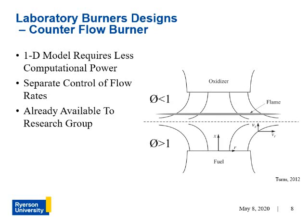Diffusion occurs across the stagnation plane, resulting in a gradient of fuel and air mixtures. A laminar flame will sit where the fuel and oxygen concentrations are near the stoichiometric conditions. The thickness of the flame will vary in equivalence ratios, denoted as phi. The equivalence ratio is the ratio between the fuel-oxygen concentration to the stoichiometric mixture. In this diagram, the fuel-rich region (phi greater than 1) is below the flame, and the fuel-lean region (phi less than 1) is above the flame. A counterflow burner is already available to the research group.